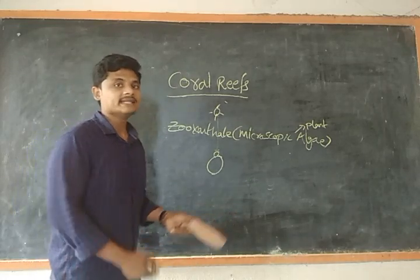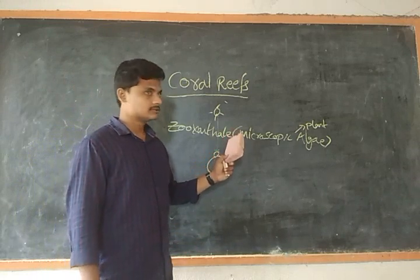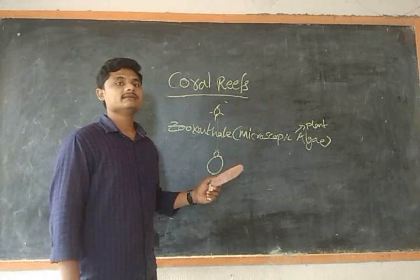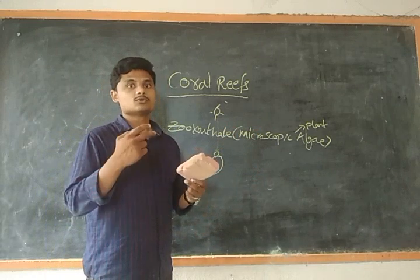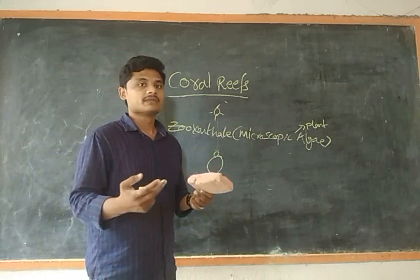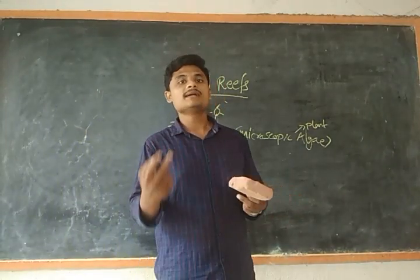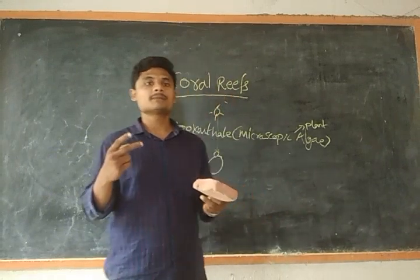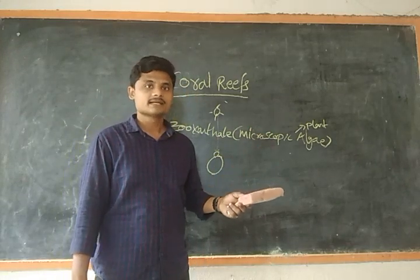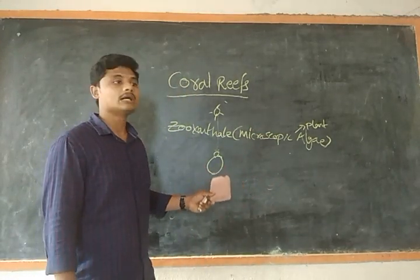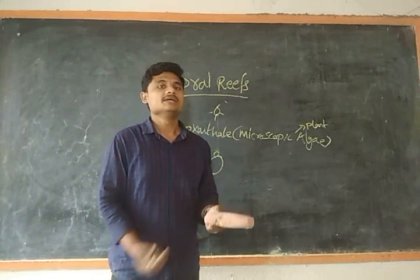Depending upon the tissues — that is the pigment — of the zooxanthellae, the microscopic algae, the coral will have different colors. Generally corals will be white in color, but depending upon the pigment of the algae, the coral also takes the same color. So this is how corals and algae have a symbiotic relationship with each other.